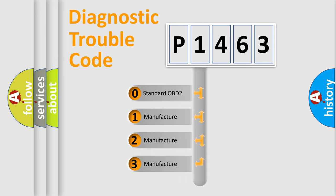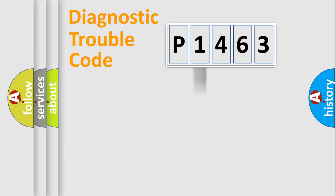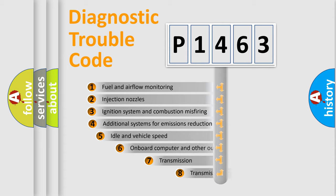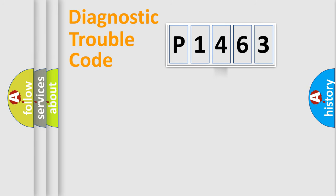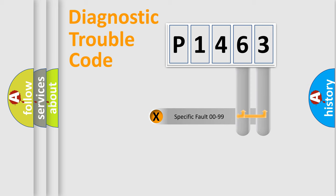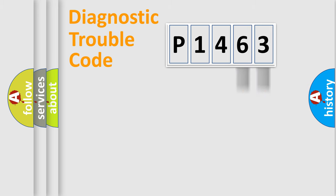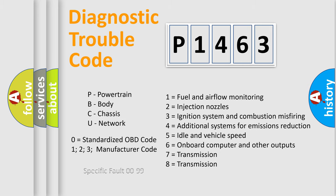If the second character is expressed as zero, it is a standardized error. In the case of numbers 1, 2, or 3, it is a more manufacturer-specific expression of the car error. The third character specifies a subset of errors. This distribution is valid only for the standardized DTC code. Only the last two characters define the specific fault of the group, and this division is valid only if the second character is zero.